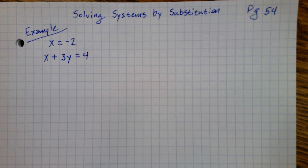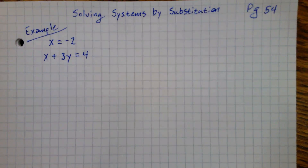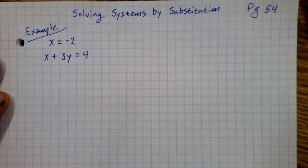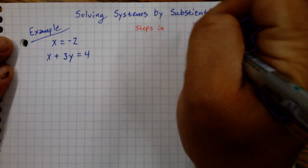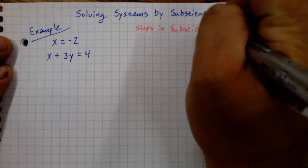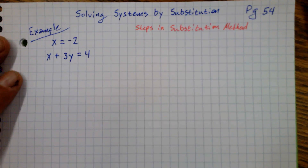That's our first equation. The second equation is x plus 3y equals 4. We're solving by substitution, so we have to follow a certain number of steps in a certain order. Write down the four steps in the substitution method.